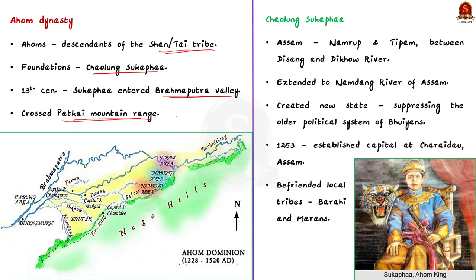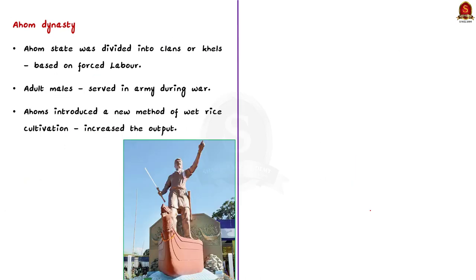In the year 1253, Sukhapa established his capital at Charaideo, Assam, and befriended local tribals consisting of the Barahi and Marans people. The Ahom state was divided into clans. Almost all adult males of the Ahom served in the army during war. At other times, they were engaged in the construction of public works and agriculture. The Ahoms introduced a new method of wet rice cultivation, which increased the agricultural output of the region.